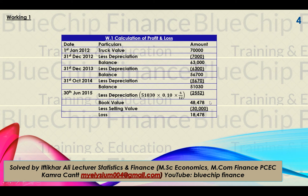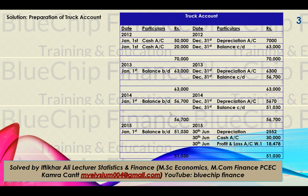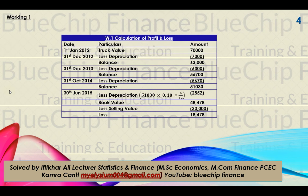If you sell the truck at an amount of 48,478 or more, it would be profitable. But you are selling at 30,000 rupees, so 18,478 is your loss. The total balance on both sides of the truck account is 51,030. That is the solution to the 2017 question.